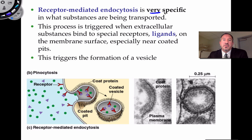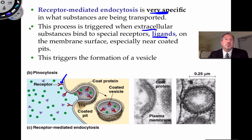Receptor-mediated endocytosis is very specific. The process is triggered when an extracellular substance — a ligand, in this case the purple triangle — binds to specialized receptors on the membrane. These receptors can move laterally in the plasma membrane and congregate in an invagination, which causes the outer membrane to pinch in. Therefore you take in more of the specific ligand than other molecules — it's receptor-mediated, meaning the receptors are helping mediate endocytosis with great specificity.